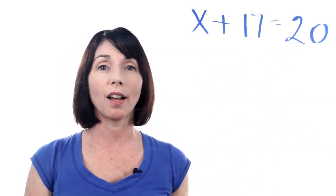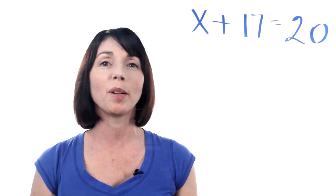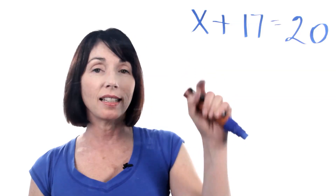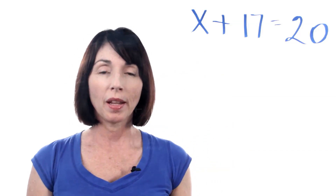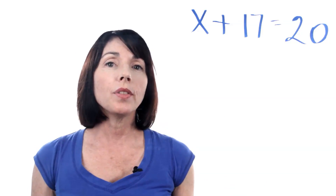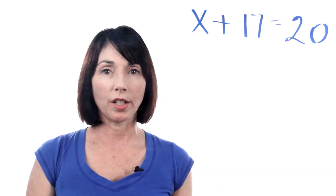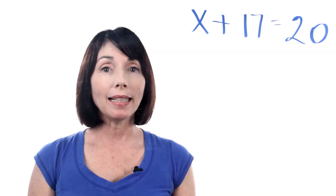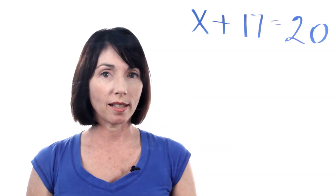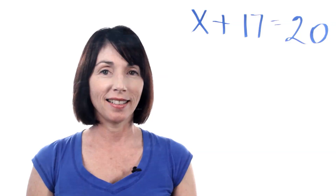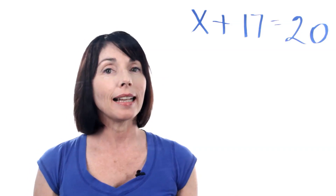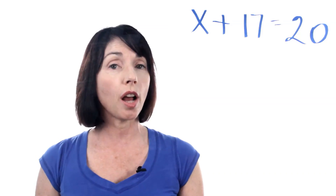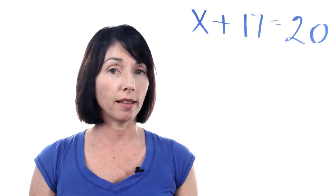This is an example of a single variable algebraic equation. X is the variable. The objective is always the same with this kind of equation: you want to get the variable by itself on one side of the equation. An equation is like a scale that's in balance, and it's your job to keep it in balance.